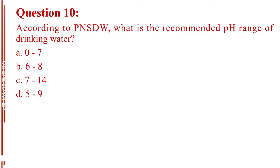Question number 10. According to PNSDW, what is the recommended pH range of drinking water? Letter A, 0 to 7. Letter B, 6 to 8. Letter C, 7 to 14. Letter D, 5 to 9. The answer is Letter B, 6 to 8.